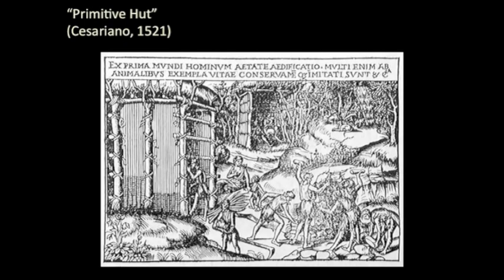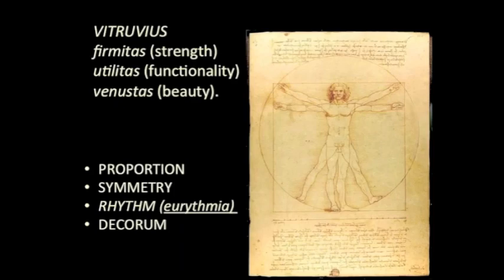Vitruvius also talks about the primitive hut, which we discussed briefly in our talk about the origins of the temple — how monumental stone architecture arises from very humble origins, from the simple act of twining together trees in the forest. Then Vitruvius talks about things specific to him that have become real guideposts in how we continue to think about architecture today: architecture is required to have three qualities.